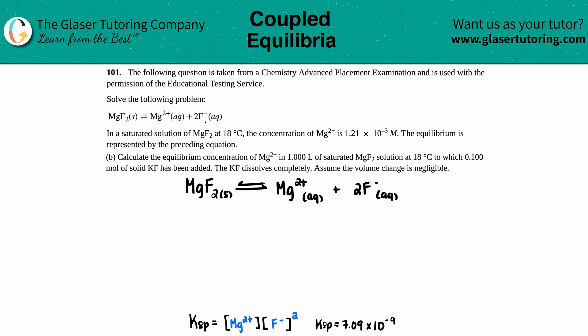We're on part B now. In part B, we have to calculate the equilibrium concentration of Mg2+ in 1.000 liter of a saturated MgF2 solution at 18 degrees Celsius to which 0.100 moles of solid KF has been added. The KF dissolves completely. Assume the volume change is negligible.